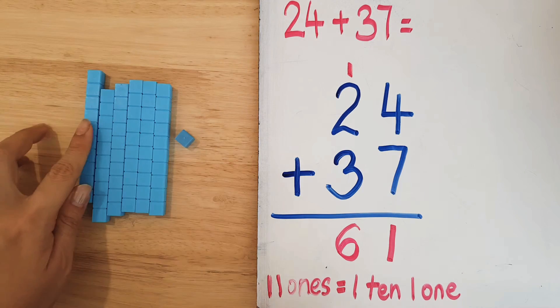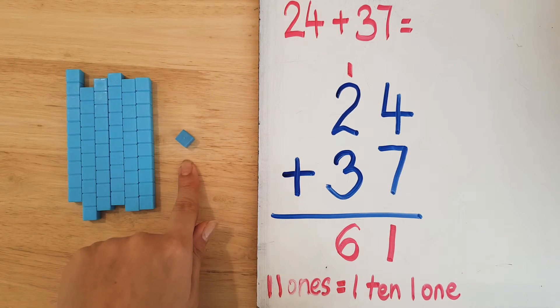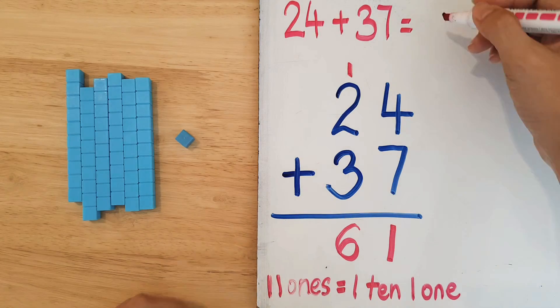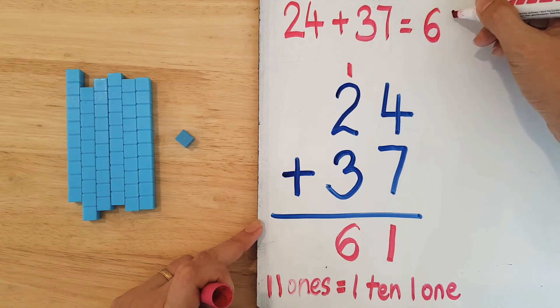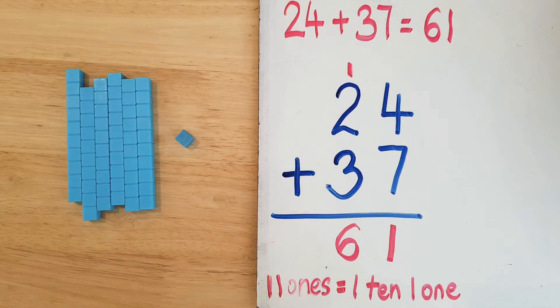So let's check. Six tens and one ones, the answer is 61. Yes! I hope you understand and don't give up.